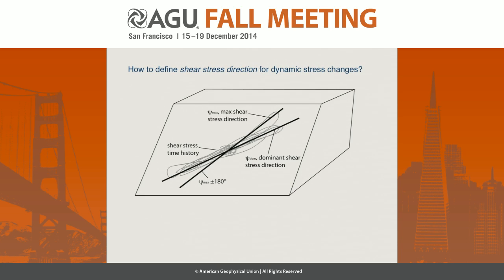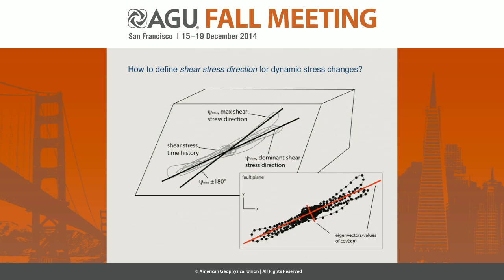With dynamic stress triggering, it's a little harder to define what the shear stress direction is than for static stress triggering, because we have this shear stress time history on the fault plane. There are a few different things we could choose. We could just take the maximum shear stress and pick the direction of that. That doesn't take into account the fact that the dynamic loading is very cyclic in nature, so we may want to include the maximum shear stress direction plus or minus 80 degrees as our loading direction. Or we might use what I consider the dominant shear stress direction, which takes into account the whole shear stress time history by treating it as a set of points on the fault plane and finding the long axis of that whole set of points.